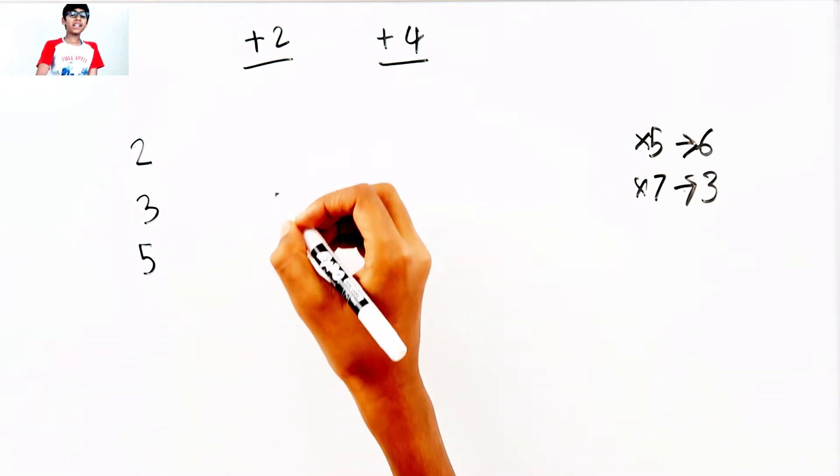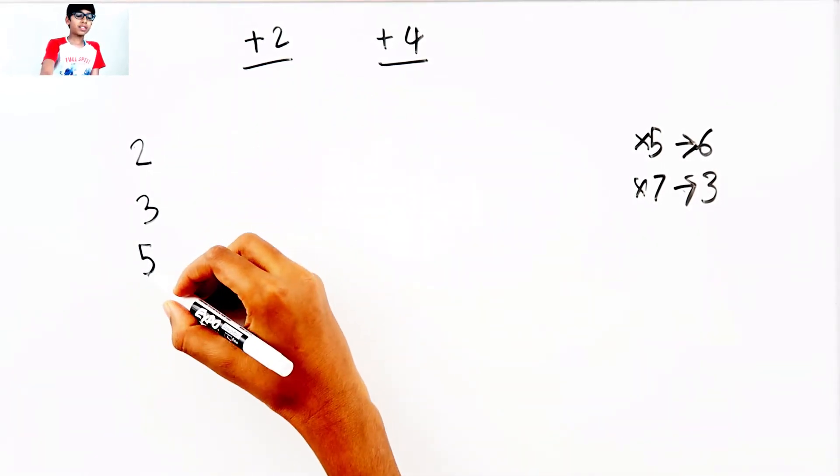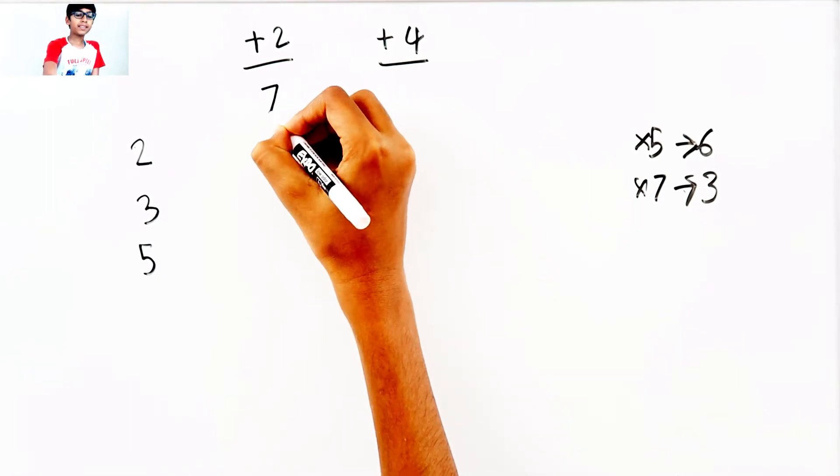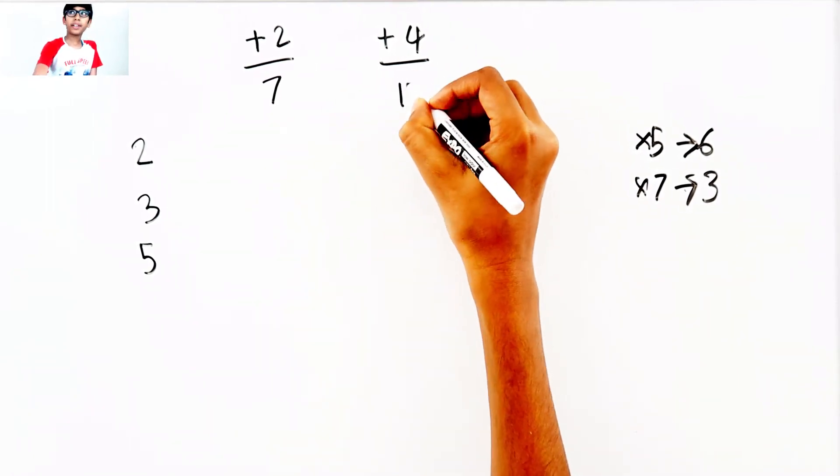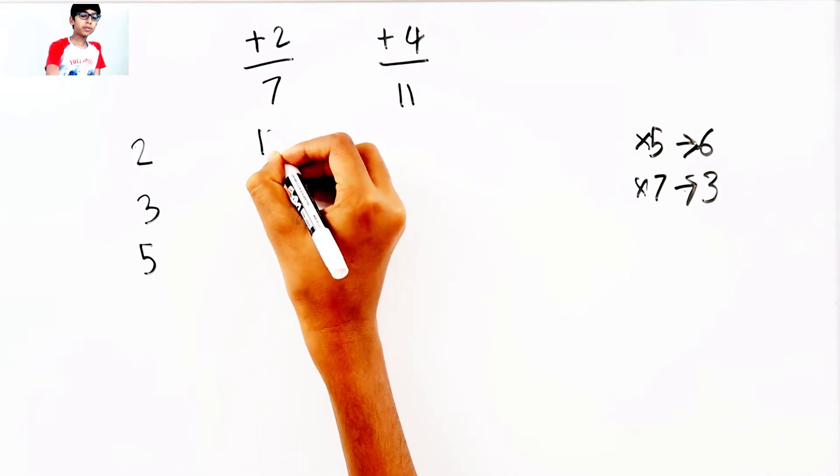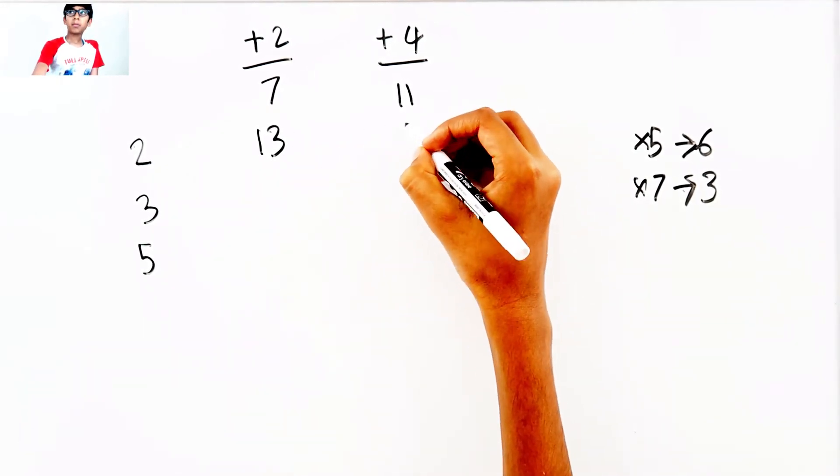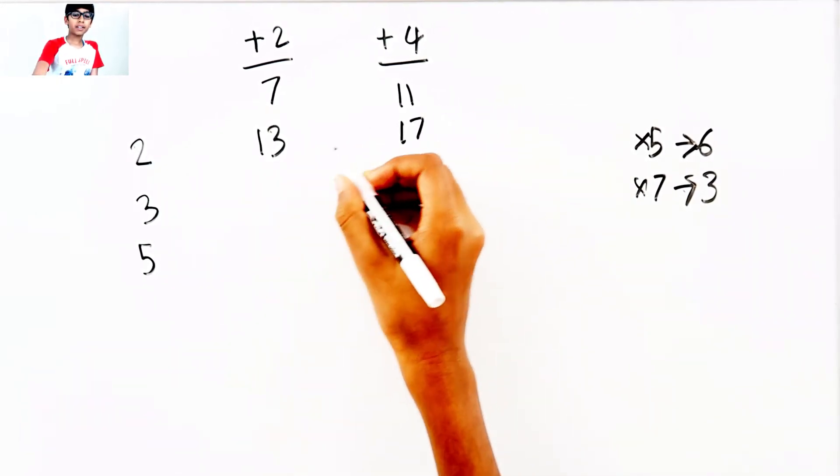Let's see how it works. 5 plus 2, 7, plus 4, 11, plus 2, 13, plus 4, 17, plus 2, 19.